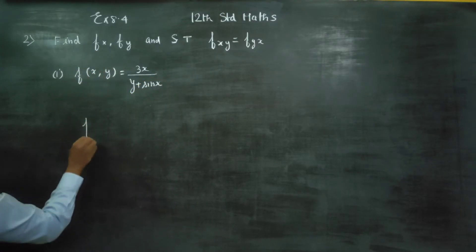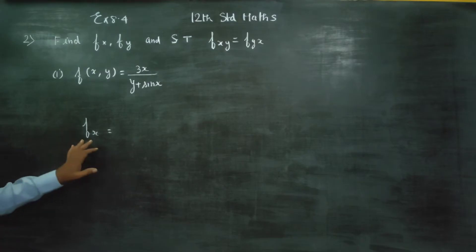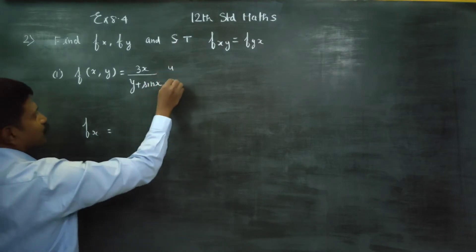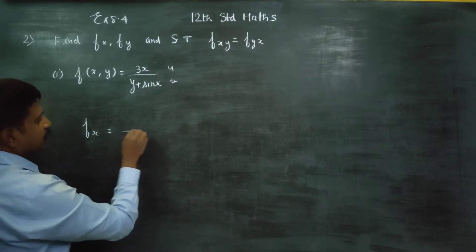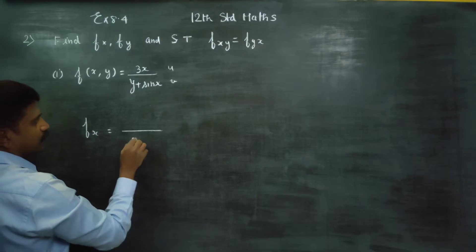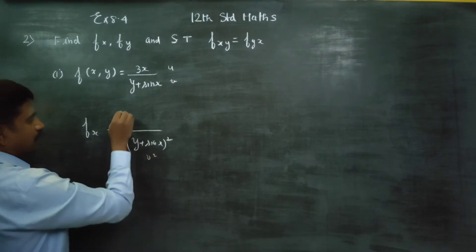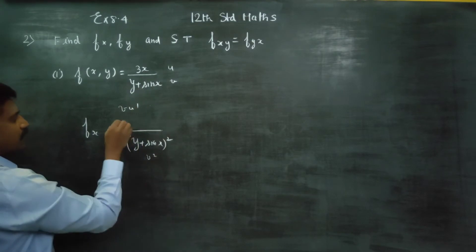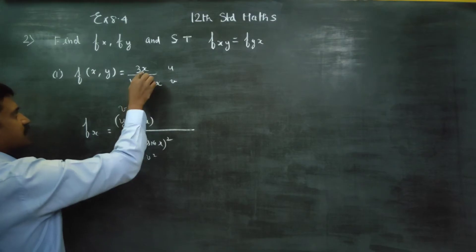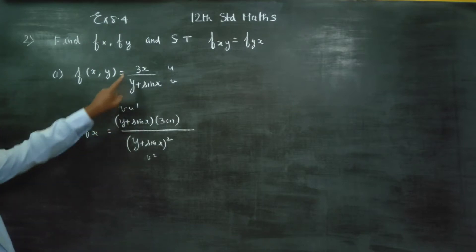First we will start with fx. fx means dou f by dou x. The formula is v squared, with u equal to y plus sin x. We apply the u/v formula: v into u dash, where we differentiate the numerator — 3 into x differentiated gives 1. Then v into u dash.